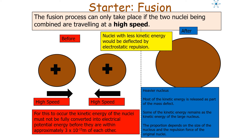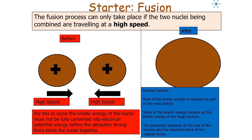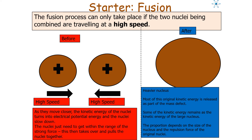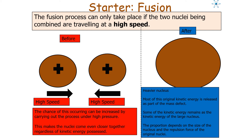For fusion to occur, the kinetic energy of the nuclei must not be fully converted into the potential energy of repulsion before they are within about 3 × 10⁻¹⁵ metres of each other. At that range, the attractive strong force can take hold and bind the two nuclei together. The nuclei just need to get within the range of the strong interaction, which then takes over and pulls them together. The chance of this occurring can be increased by carrying out the process under high pressure, which makes the nuclei come closer together regardless of kinetic energy, making it more likely they are within the strong force interaction range.